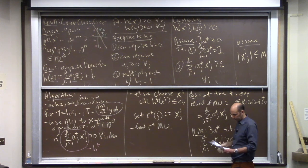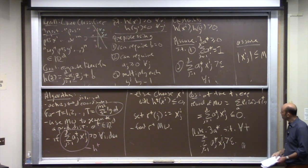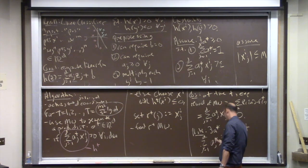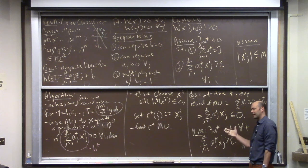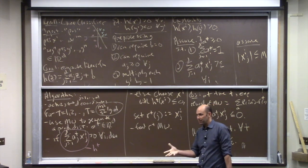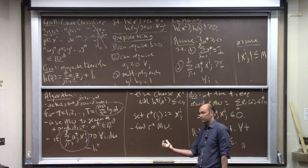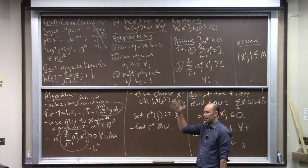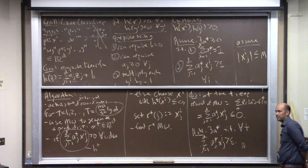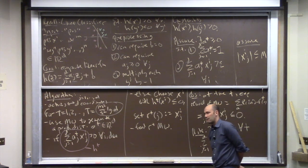The last two things - the minimax proof with one player using MW and the other best-responding, and this linear classifier algorithm - are really just the same thing. We can think of the classification problem as a zero-sum game between us and an adversary, and in that framing, the thought experiment is exactly the algorithm. The rows correspond to the D coordinates and the columns correspond to the data points. The payoff matrix is just populated with the data point coordinates as columns. The row player uses multiplicative weights to generate distributions over coordinates - coefficient vectors to try - and the column player best-responds by choosing the data point that the current classifier gets most wrong.